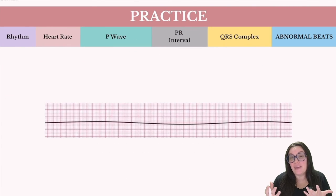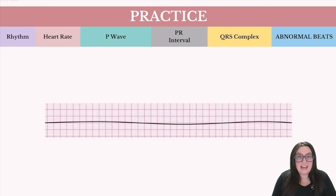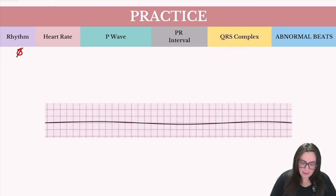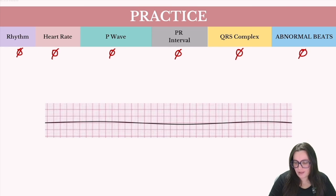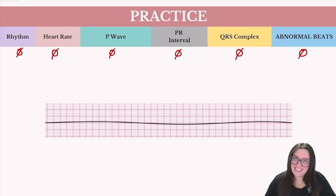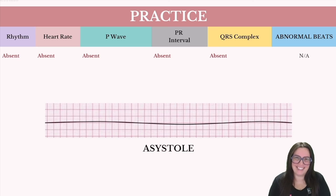Last up — I think this is the easiest identifiable rhythm. Do we have a rhythm here? No. There's no rhythm at all — just this flat line appearance. No heart rate measurable, no P wave activity, no PR interval, and the QRS complex just doesn't exist. It's a completely flat line. What am I dealing with? You guessed it — asystole.